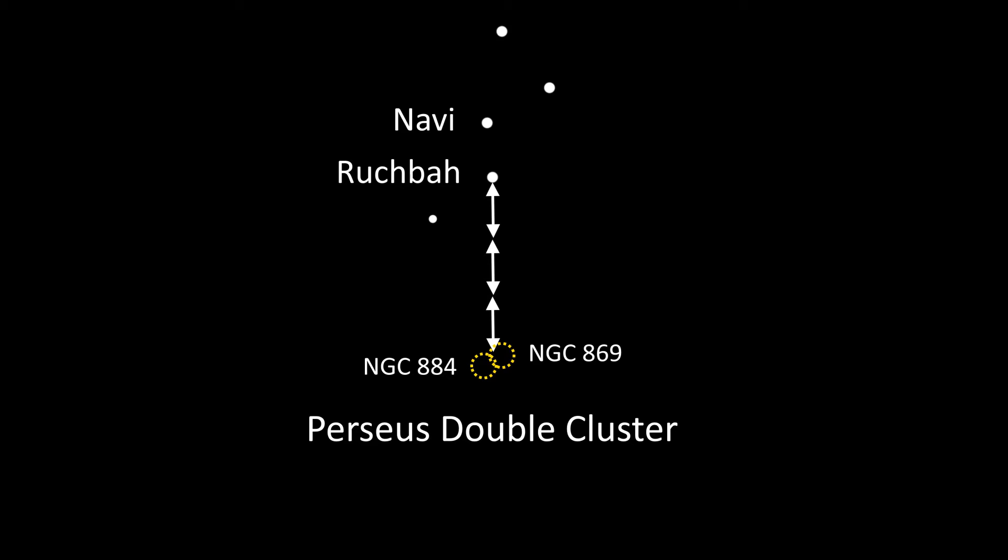Anyway, back to the double cluster. Take note of the distance between the stars of Navi and Ruchbah, and then go down three of these numbers from the star Ruchbah.